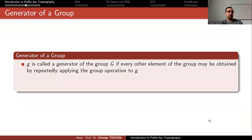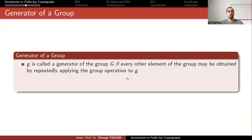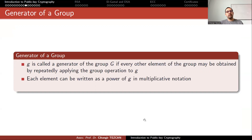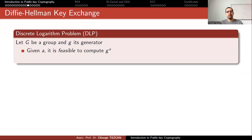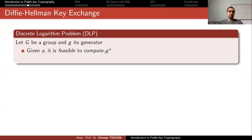A small g is called the generator of the group G if every other element of the group can be obtained by repeatedly applying the group operation on g. In multiplicative notation, each element can be written as a power of g; in additive notation, as a multiple of g. Given a, it is feasible to compute g^a; but given the output b (knowing b and g but not a), it should be hard to find a.